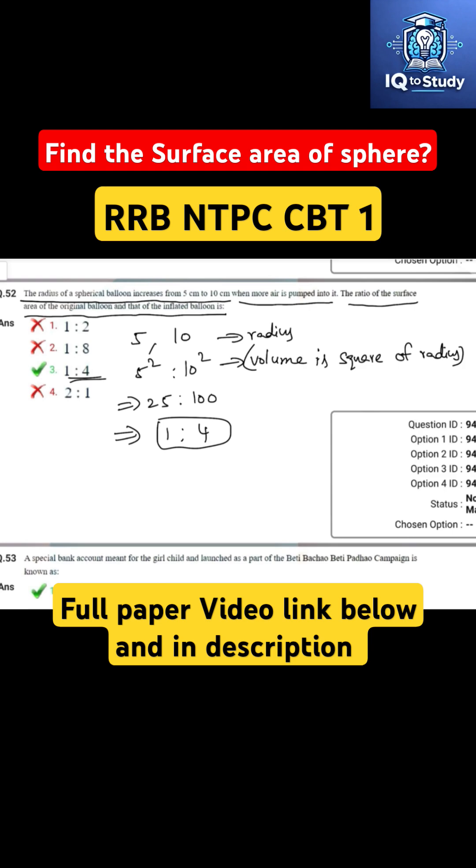The ratio of the surface area of original balloon and that of inflated balloon is 1 is to 4. Option number 3.